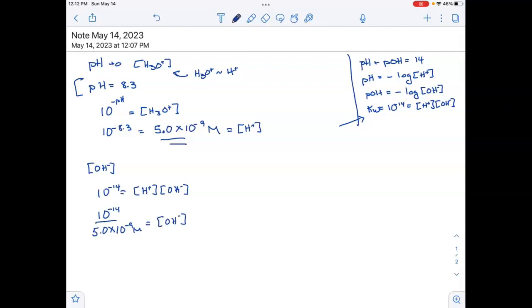So let's see. 10 to the minus 14 divided by 5 times 10 to the minus 9, and I get the hydroxide concentration is equal to 2.0 times 10 to the minus 6 molar.